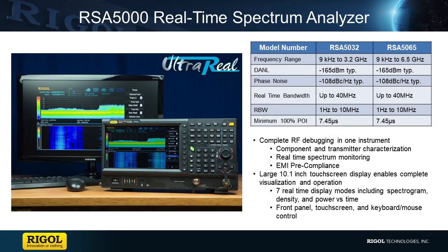The RSA5000 combines real-time capture and sweep capture capabilities with a flexible form factor, allowing an engineer to select their preferred testing techniques, interface, and use modes. With frequency ranges of 3.2 GHz and 6.5 GHz, the RSA5000 is ideal for analysis of components and complex signals in EMI, IoT, Wi-Fi, cellular, and a variety of other wireless communication applications. The RSA5000 gives engineers increased control, accuracy, and flexibility over their RF measurements throughout the design process, providing uncompromised performance at an unprecedented value. If you have any questions regarding this instrument or family of instruments, please contact us at Regal or visit RegalNA.com for more details.